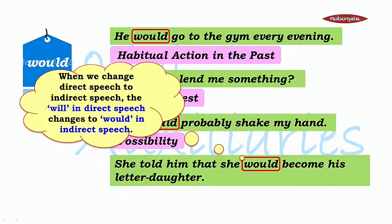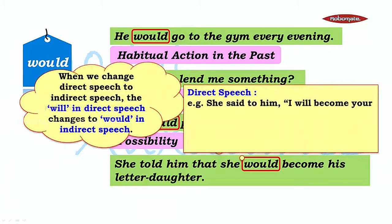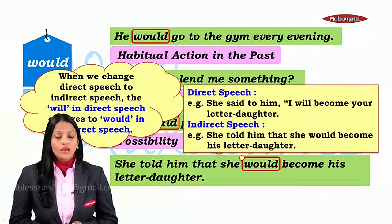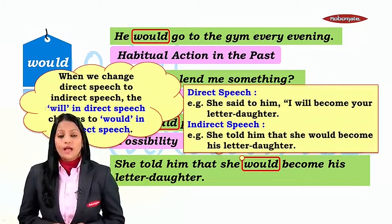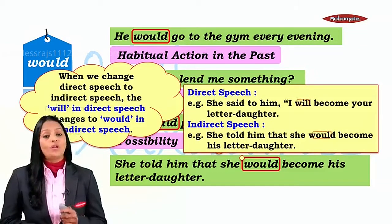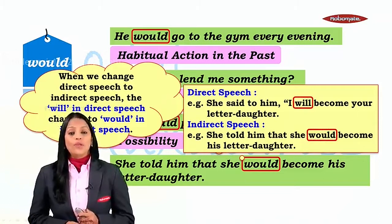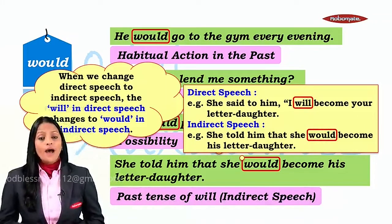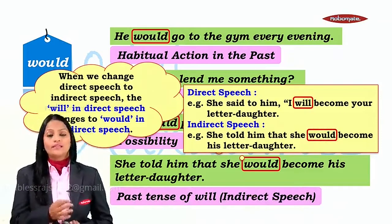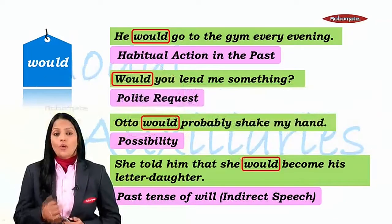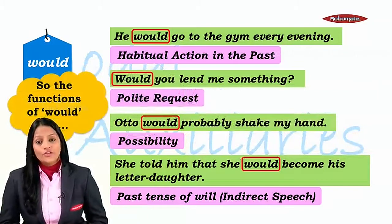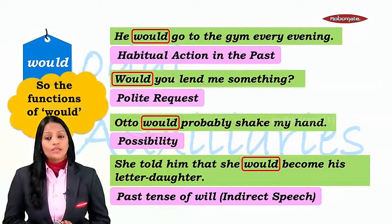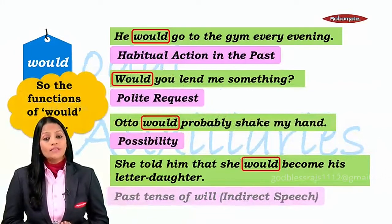When we change a sentence from direct to indirect speech, the 'will' in direct speech changes to 'would' in indirect speech. For example: 'She said to him, I will become your daughter.' When changed to indirect speech it becomes: 'She told him that she would become his daughter.' So 'will' changes to 'would', and the function here is the past tense of 'will' in indirect speech. The functions of 'would' are: habitual action in the past, polite request, possibility, and past tense of 'will' in indirect speech.